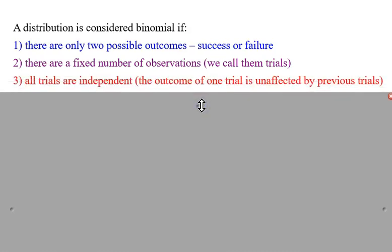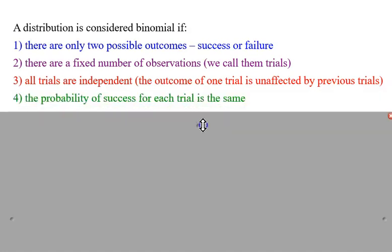Now all the trials have to be independent. It's not dependent where if this one happens, then the second one will change. No, it has to be independent from each other. It doesn't rely on each other to do anything. Last thing is probability of success for each trial is the same. It must be the same. If they're not the same, it's not binomial distribution.